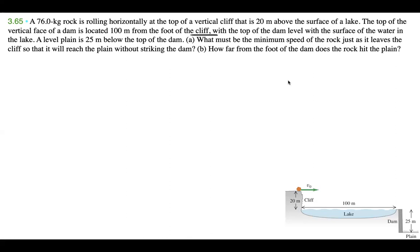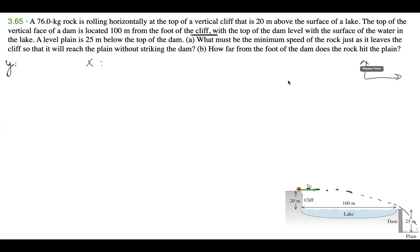Let's get started on part A. What must be the minimum speed of the rock just as it leaves the cliff so that it will reach the plane without striking the dam? We want the projectile to follow a path that goes just above the corner of the dam. This is two-dimensional projectile motion, so we can write down our x and y variables. We'll set up a Cartesian coordinate system with plus x to the right and plus y upward.